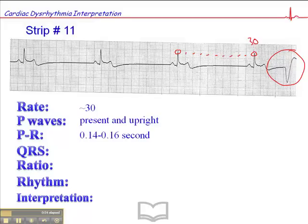The PR interval is about 0.14 to 0.16 second. The QRS is less than 0.12, so it's narrow. The ratio is 1 to 1. The rhythm is regular, except at the end here.